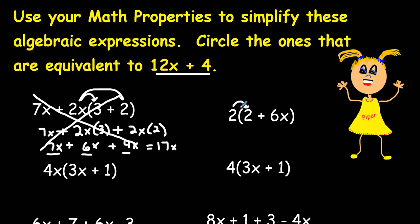When we distribute multiplication here we get 2 times 2 is equal to 4 and 2 times 6x is equal to 12x. If we use our commutative property which allows us to change the order without changing the value for this addition problem, we get 12x plus 4 so that one is correct and we're going to circle it.